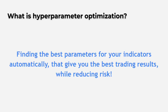Now let's start with the question: what is hyperparameter optimization? If you could describe the principle behind hyperparameter optimization, or hyperopt, and keep this description as understandable as possible, then you could say that this is simply finding the best parameters for your indicators automatically, and that can give you the best trading results while reducing risk. This means that the bot does the heavy work of backtesting your strategy, every time using different parameters for your indicators, and keeps score of the best possible combinations.